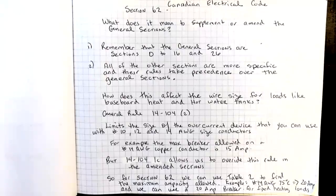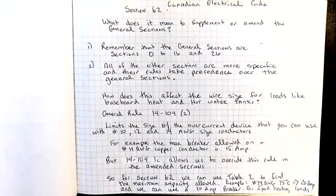But if you look at 14-1042, it allows us to override 14-1042 in the amended sections. So for section 62, we can use Table 2 to find the maximum capacity allowed, which is 20 amps, and then we can use a 20-amp breaker for fixed heating loads.